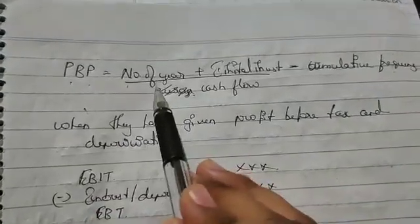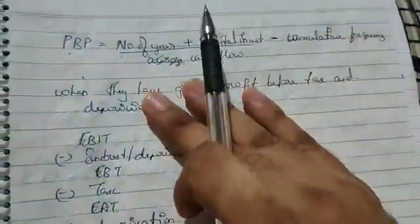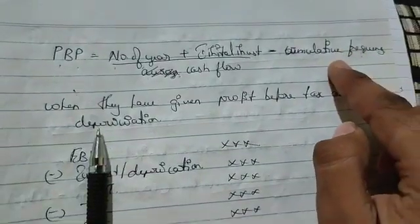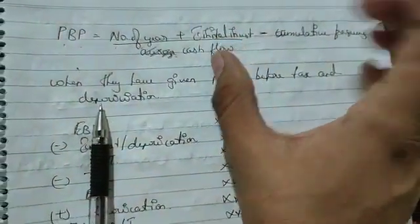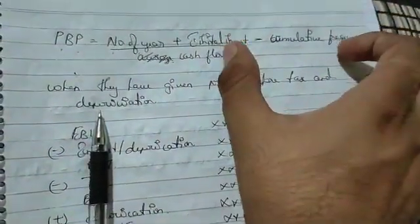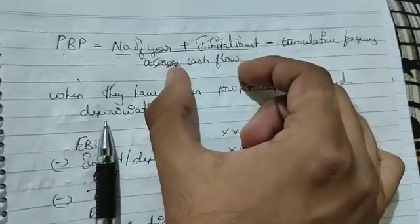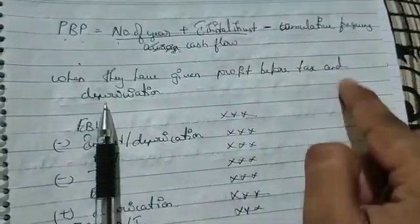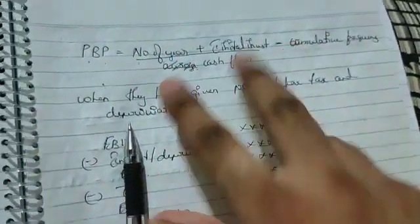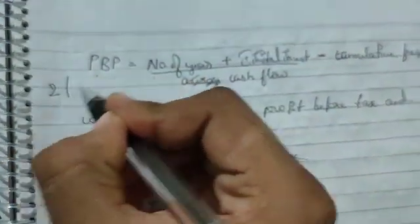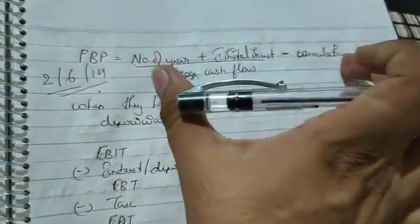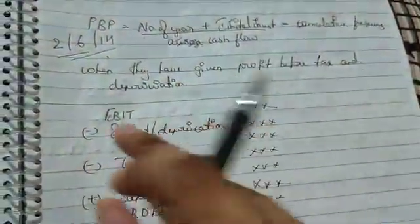For payback period, we need the number of years. This is the formula: number of years plus initial investment minus cumulative frequency. We calculate cumulative frequency like 10,000 then 20,000 then 30,000 and so on. In the cumulative column we mark down the year also. This formula is used for two marks, six marks, and maybe 14 marks questions.